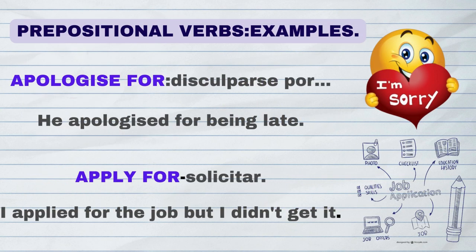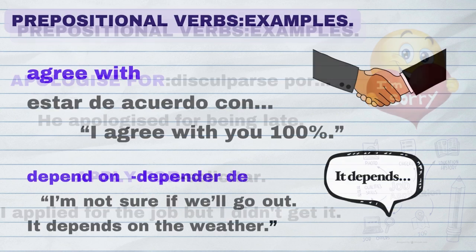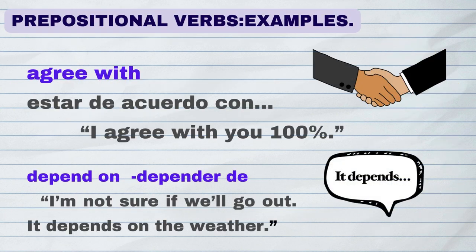Apologize for: He apologized for being late. Apply for: I applied for the job but I didn't get it. Agree with: I agree with you 100%. Depend on: I'm not sure if we'll go out — it depends on the weather.